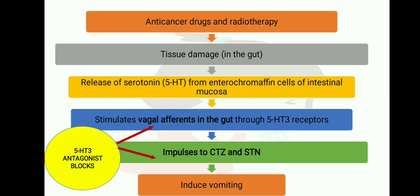How do 5-HT3 antagonists work? Anti-cancer drugs or radiotherapy cause tissue damage and release serotonin (5-HT3) from enterochromaffin cells in the intestinal mucosa. This stimulates vagal pathways through 5-HT3 receptors. When the doctor prescribes a 5-HT3 antagonist, it blocks these impulses to the CTZ and brain, greatly reducing the vomiting effect.